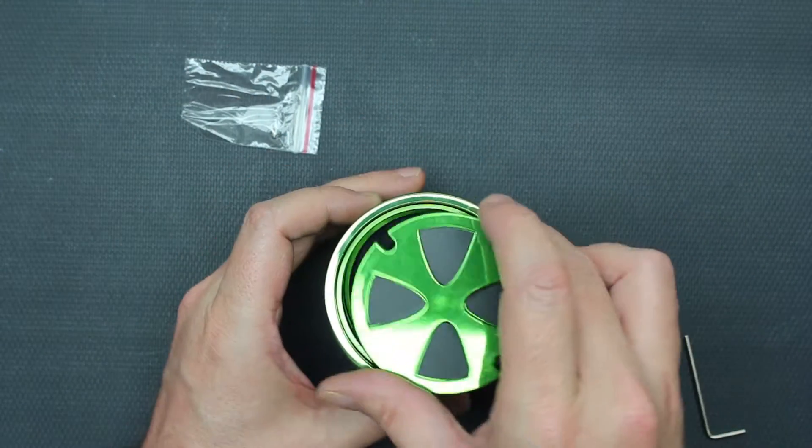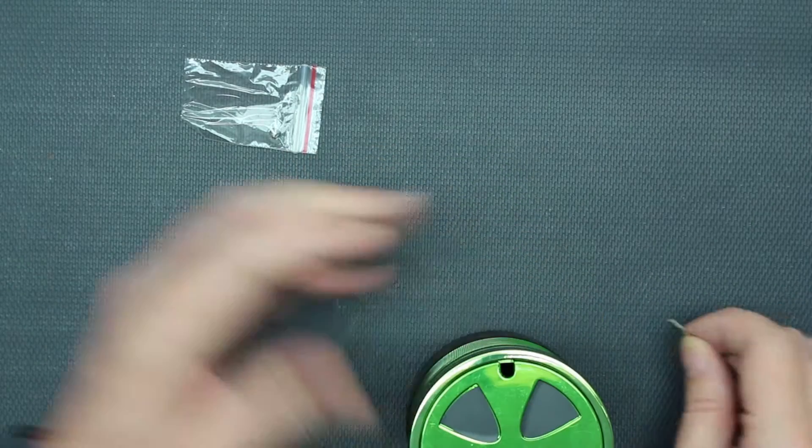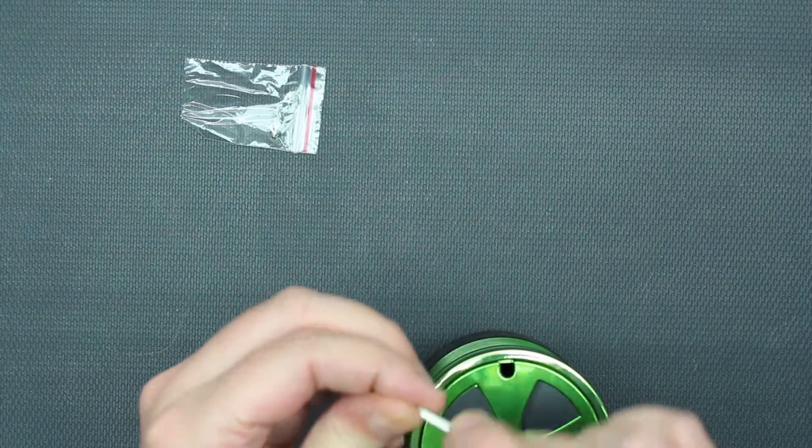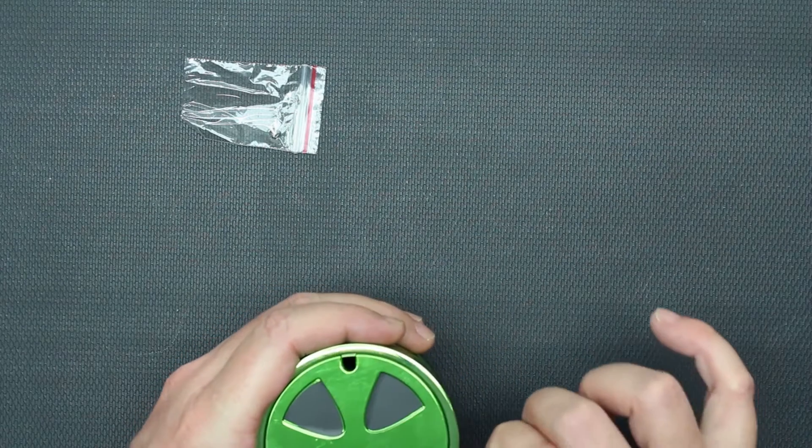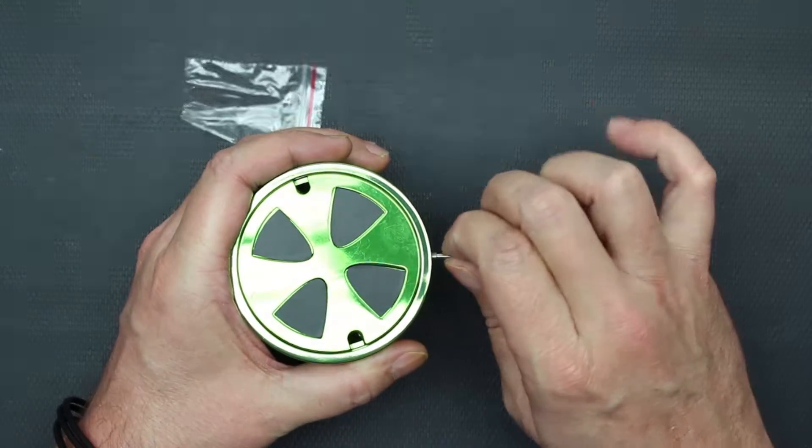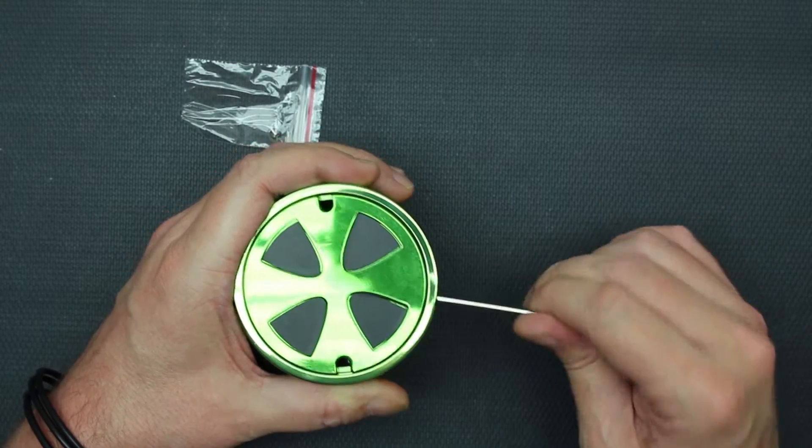Take your wire, put it in there, drop the cap in. Take one of the extra set screws that comes in the package, snug it down. Again, you don't have to go crazy.